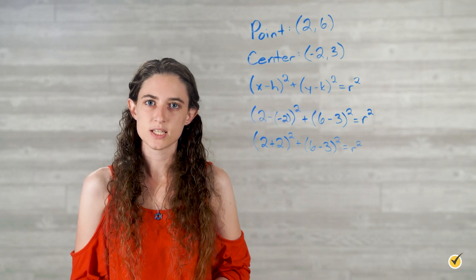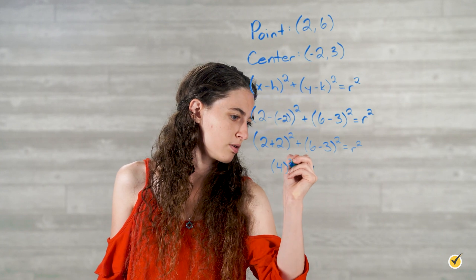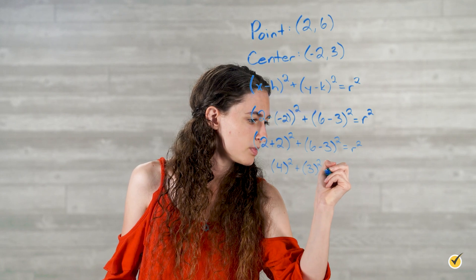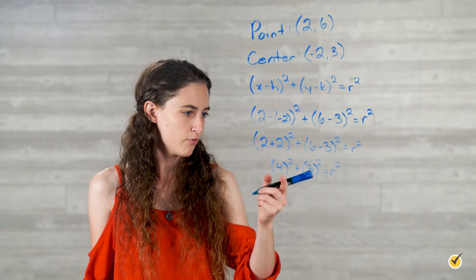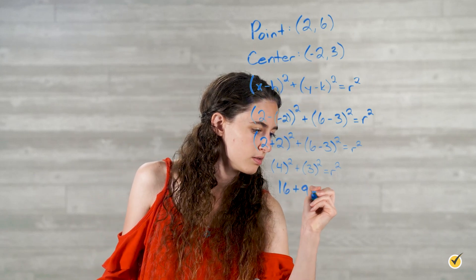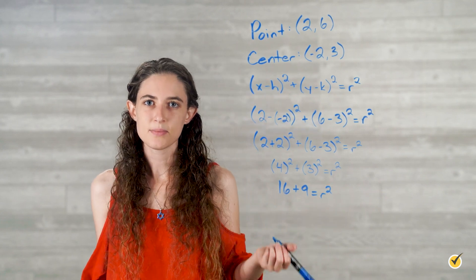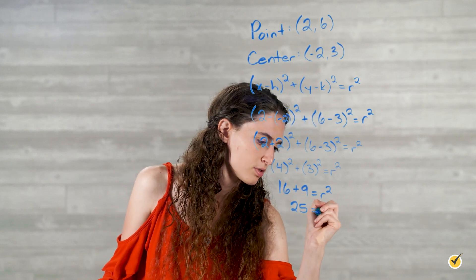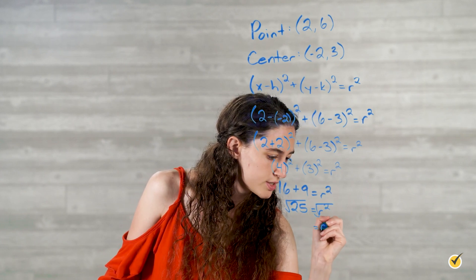Then we evaluate what's in each set of parentheses. 2 plus 2 equals 4, so we have 4 squared plus 6 minus 3 is 3, 3 squared equals r squared. We apply our exponents. 4 squared is 16, 3 squared is 9 equals r squared. And then we're going to add them and solve for r. So 16 plus 9 is 25 equals r squared. We'll square root both sides and get that r is equal to 5.